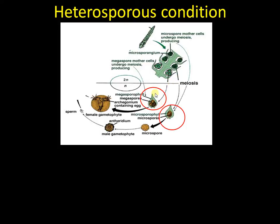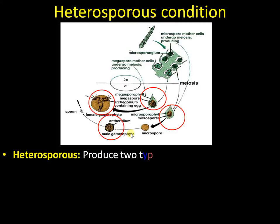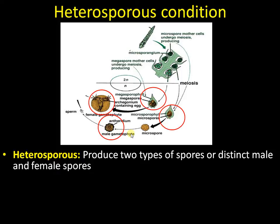The second condition is heterosporous. Hetero means two — in this condition there are two types of spores: the megaspore, or female spore, and the microspore, or male spore. The female spore gives rise to a gametophyte bearing the archegonium, the female reproductive structure, whereas the male spore produces a male gametophyte with the antheridium.